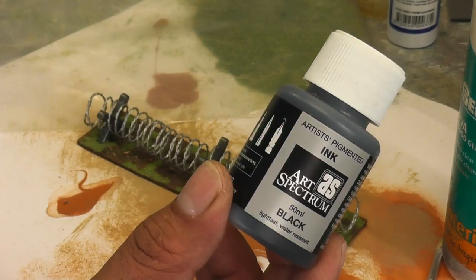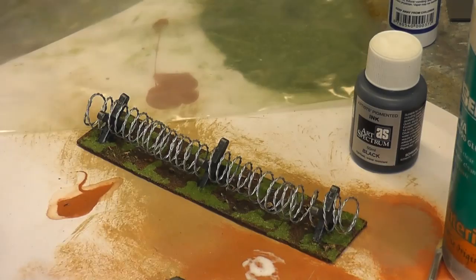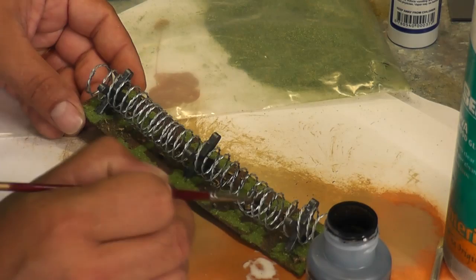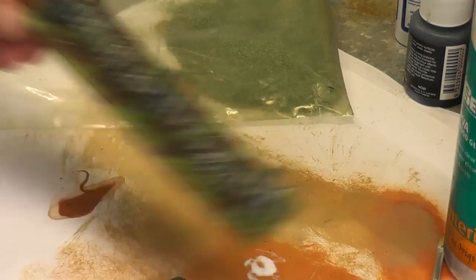I'm going to do one more thing. I'm going to take some black ink - you could use a wash but I'm going to use an ink - and just run a little bit over the wire just to help give us that extra shading to the wire. That's all I'm going to do, just a little bit on the top. You could go ahead and do the whole wire if you want to but there's our piece finished.